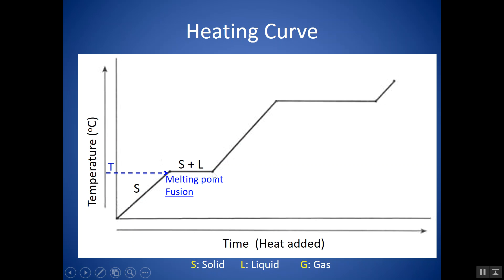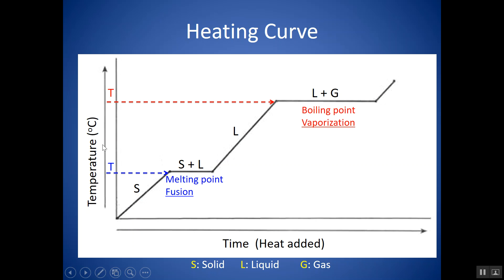Once it's completely liquid, as you add more heat the temperature rises again. This line corresponds to a single phase of liquid. The temperature will rise until it starts to boil, at which point the temperature remains constant during the phase change as the liquid changes into gas. You would have both liquid and gas in your container along this line. Going across, you can find the boiling point temperature. Another name for boiling is vaporization. Once it's fully a gas, as you add more heat, the temperature can once again rise.